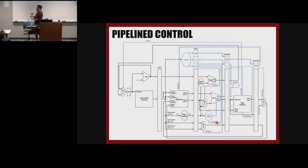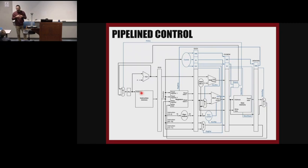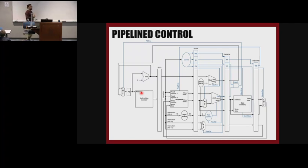This is a data path that shows all the control signals. Based on information we have about the MIPS processor, we make design choices. One of the most important design choices is where do we want to place the control unit — at what stage should it be? We have five stages and registers for each. This is an important design choice and it has its own trade-offs.